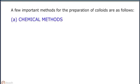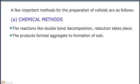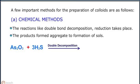Chemical methods. The reactions like double bond decomposition, reduction takes place. The products formed aggregate to formation of sols. Consider the reaction As2O3 plus 3H2S undergoes double decomposition to give As2S3 sol plus 3H2O.